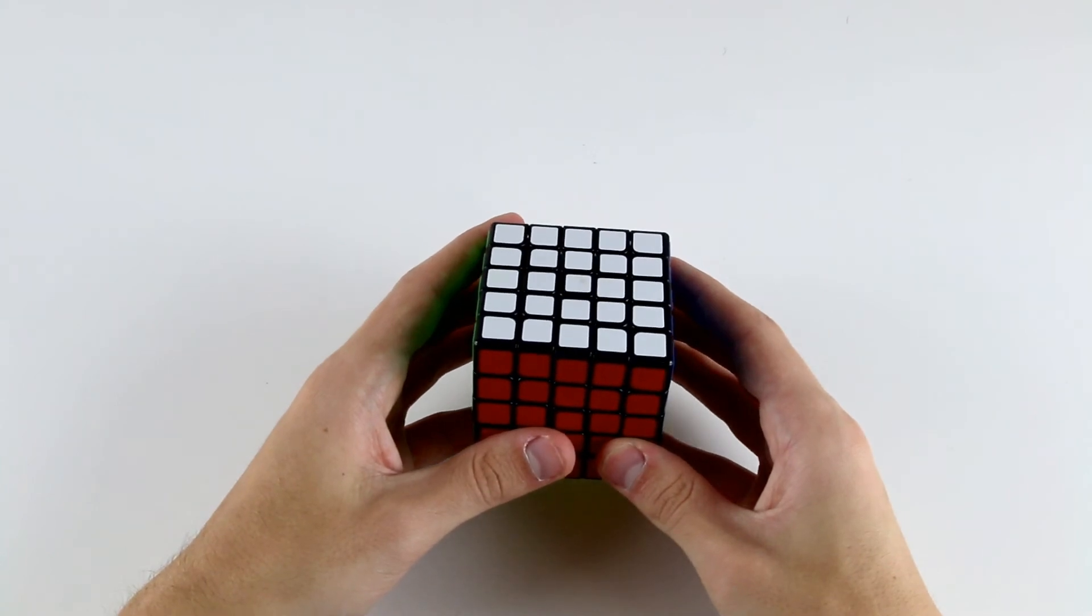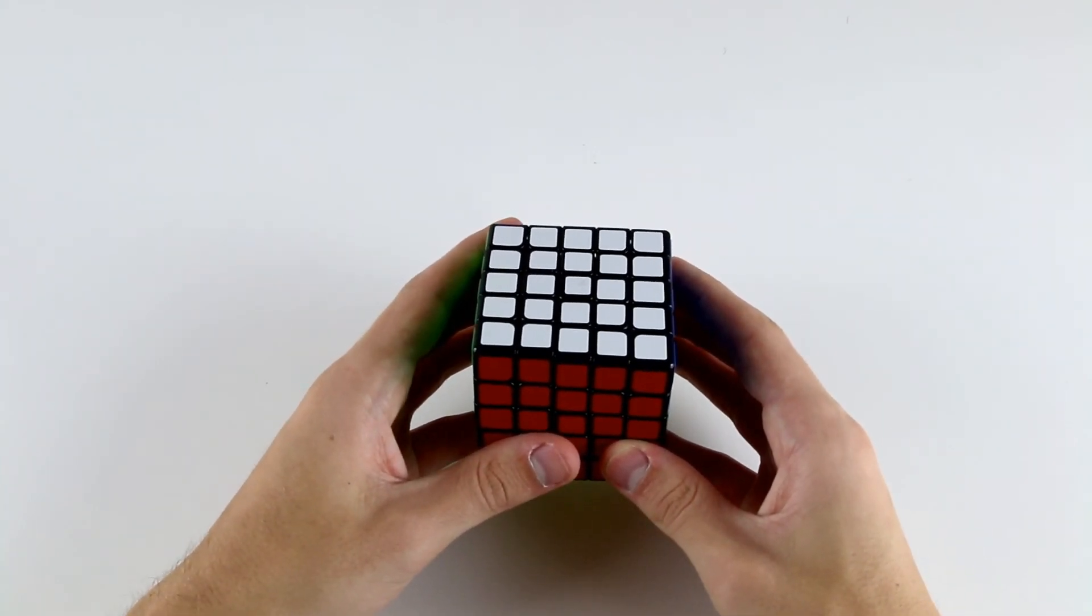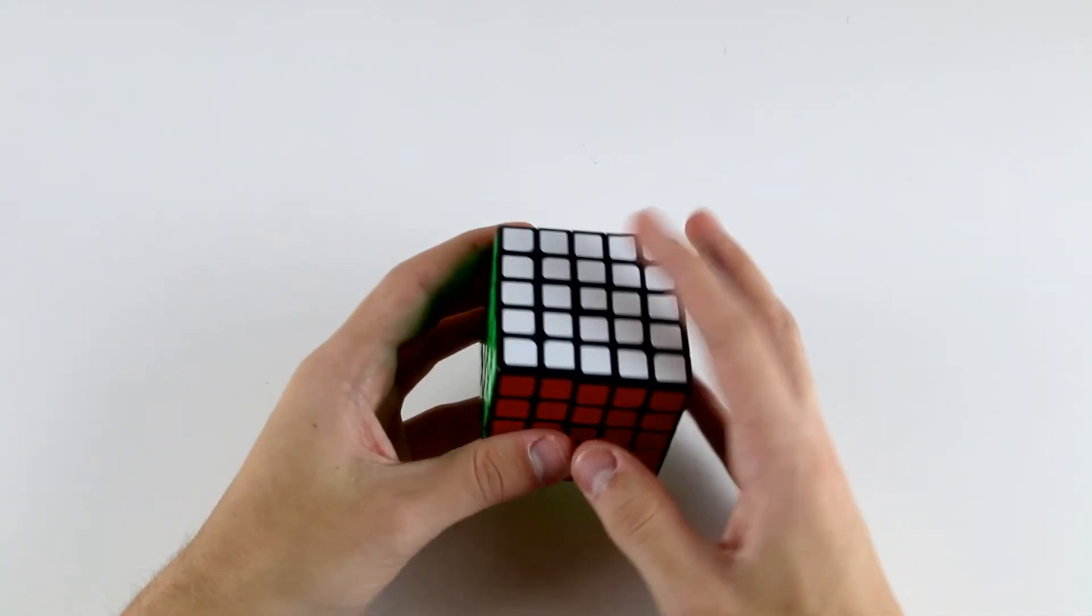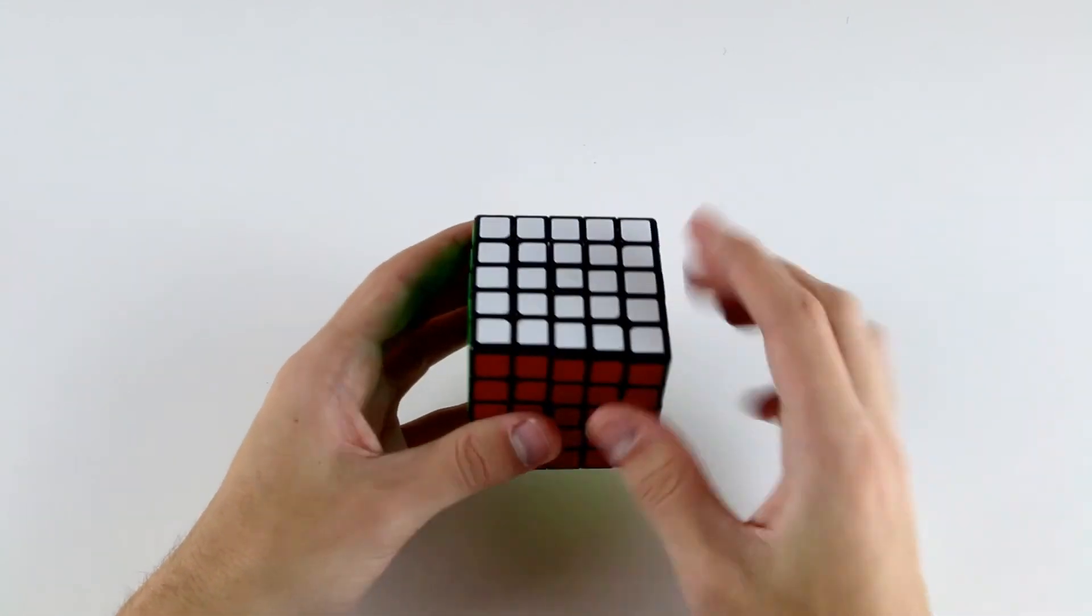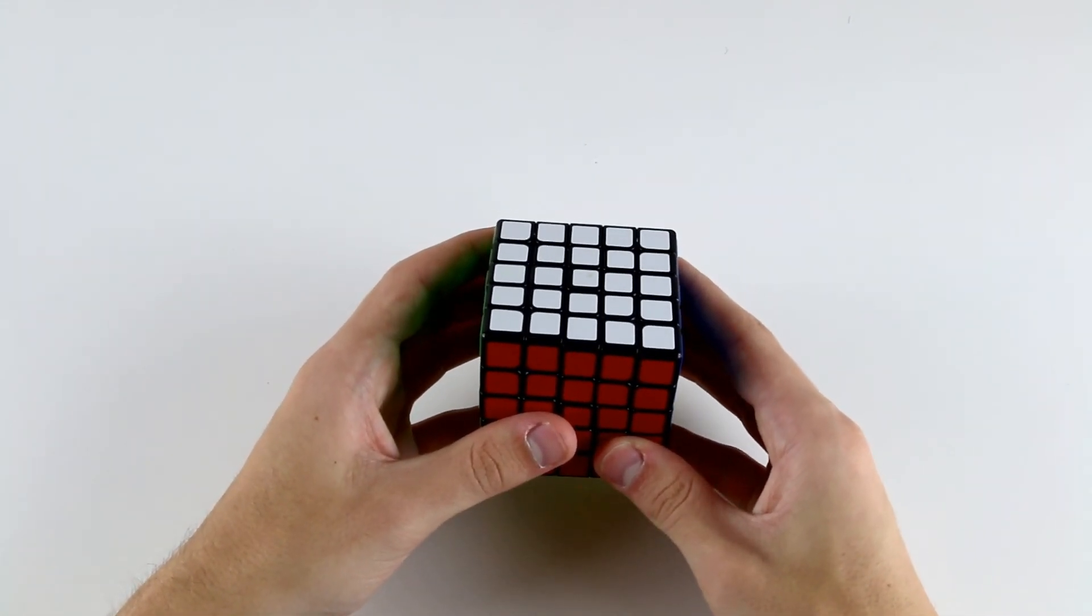In the following videos in this module, I'm going to teach you how to solve the 5x5 using this method, the reduction method, by solving our center pieces, pairing up our edge pieces, and then solving the cube as if it were a 3x3.